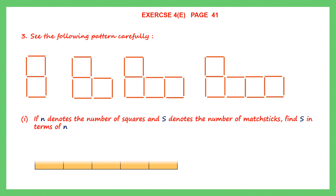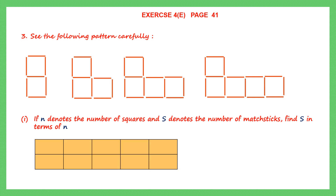Let's draw a table first with the first row n and the second row S. So n is the figure number: first, second, third and fourth figure — that is 1, 2, 3 and 4. In the first figure, we count the matchsticks: 1, 2, 3, 4, 5, 6, 7. In the first figure we have 7 matchsticks.